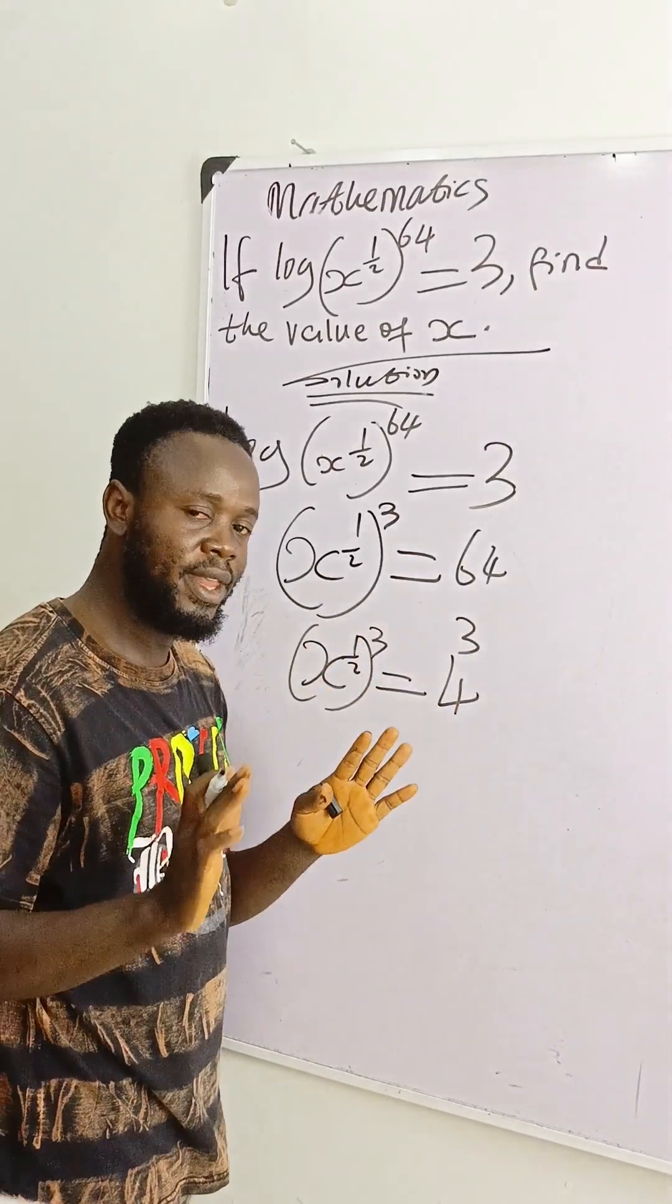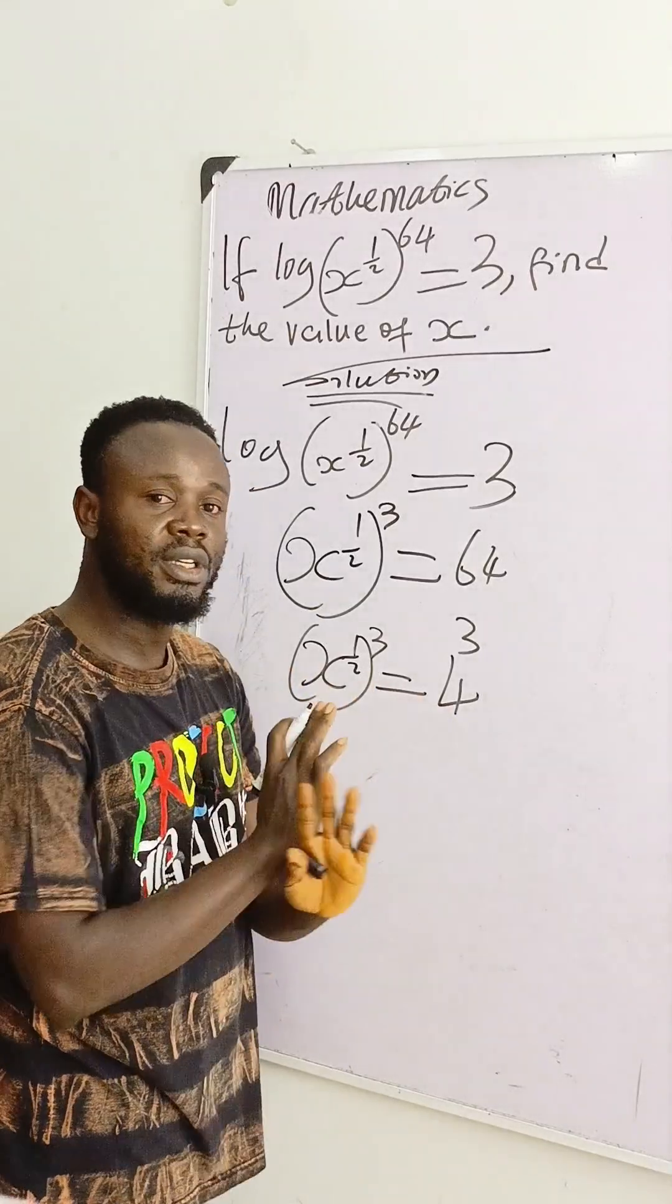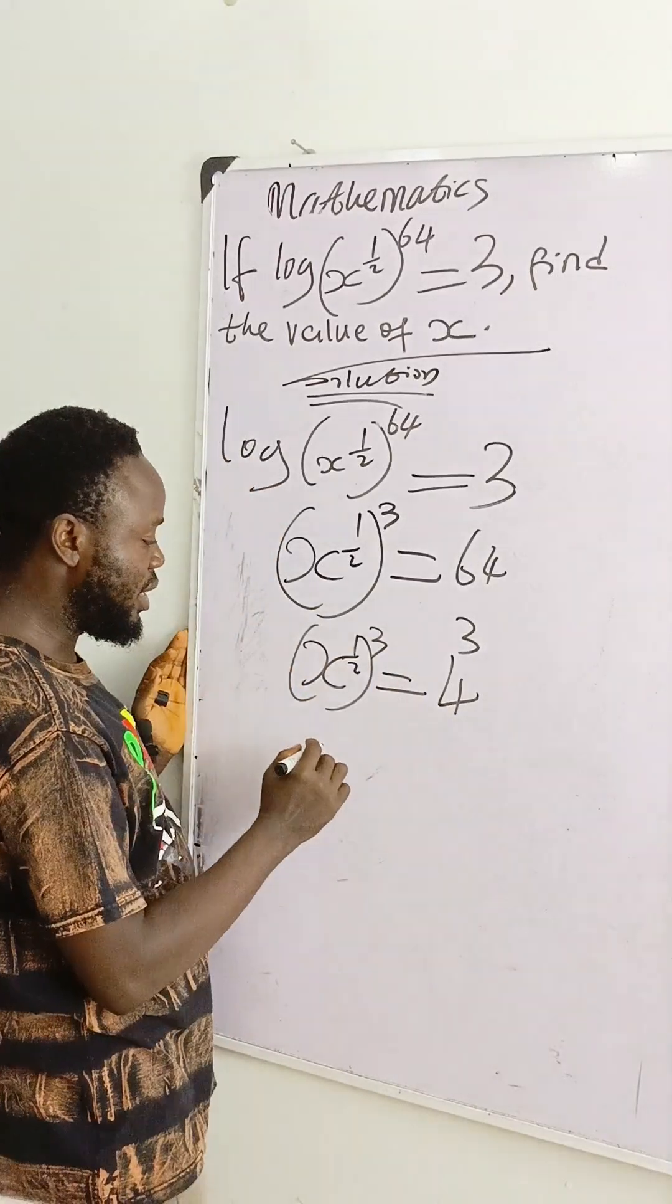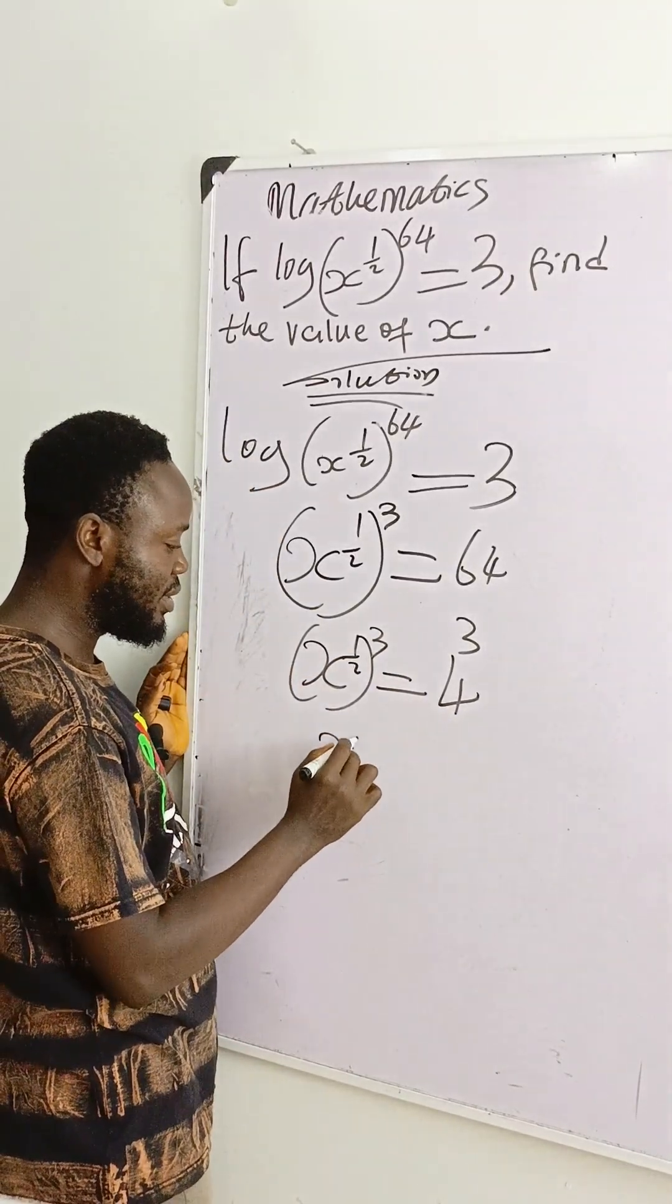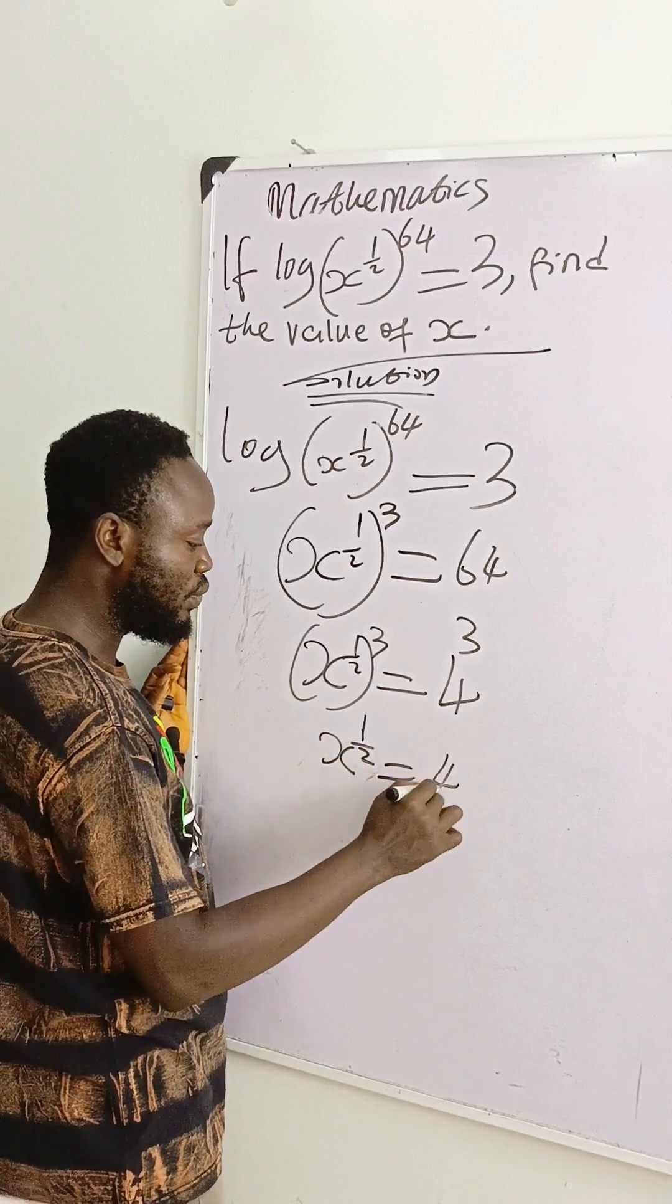The exponents are equal and therefore the bases also must be equal. What I'll do here is write x raised to power 1/2 is equal to 4.